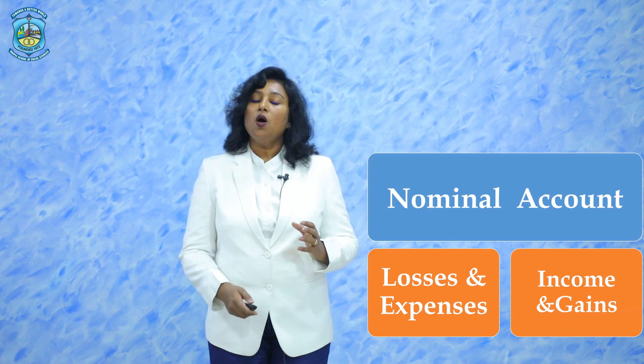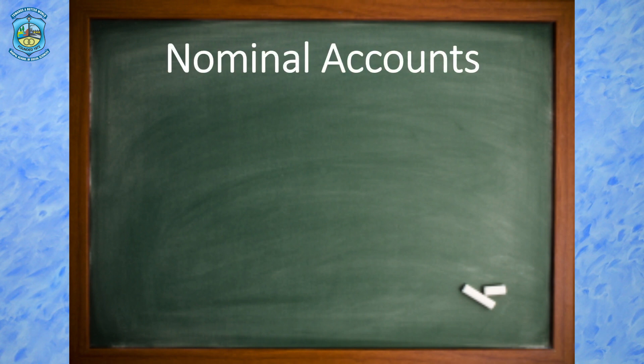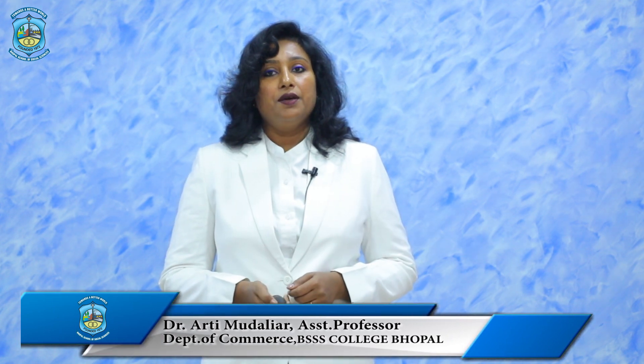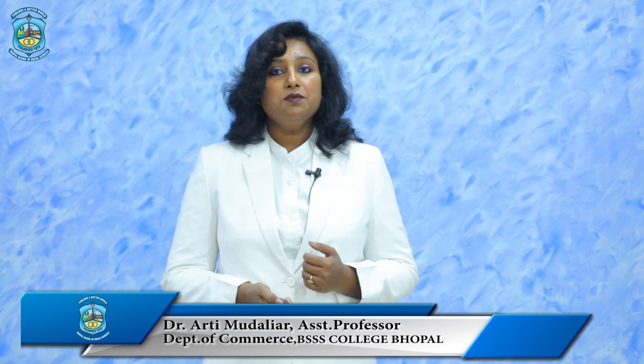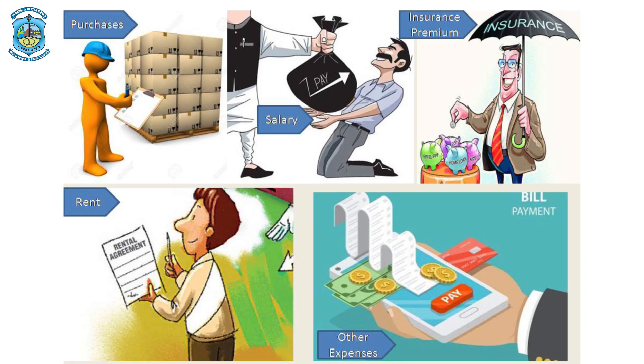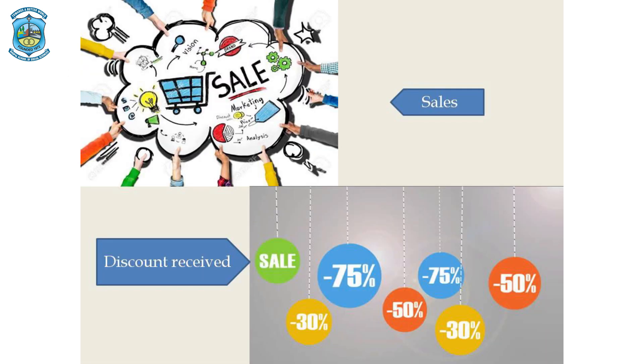The second impersonal account is nominal account. The nominal account includes all the losses and expenses and all the incomes and gains. All nominal expenses, incomes and gains are temporary accounts because they are not carried forward to the next year; they are transferred to the profit and loss account of the current year itself, and the result is evaluated to calculate the capital. The examples of nominal account expenses and losses are purchases, salary, insurance premium, rent account and other expenses. The incomes are sales revenue and discount received, etc.